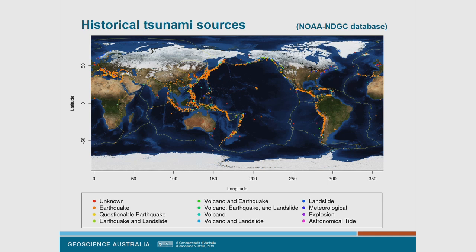This is an image of a simulation of the maximum water level caused by the 2011 Japan tsunami. Tsunamis can be found throughout history, and the most extensive database is the NOAA NGDC database depicted here — a plot of tsunami source locations where a tsunami was generated. You can also see lines defining plate tectonic boundaries.